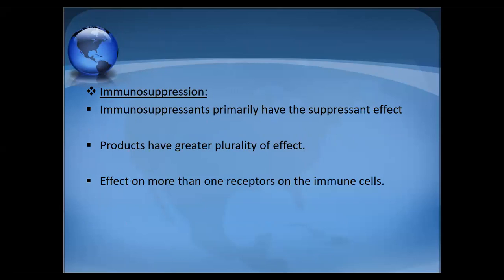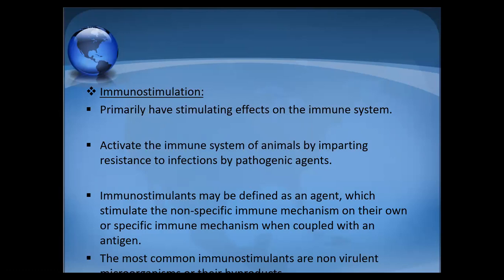Immunosuppressants primarily have a suppression effect; their products have greater plurality of effect, meaning they suppress immune cells such that their phagocytic activity toward their own cells is decreased. They have effects on more than one receptor on the immune cells. Immunomodulator substances bind to the immune system and activate it by imparting resistance to infections by pathogenic agents.